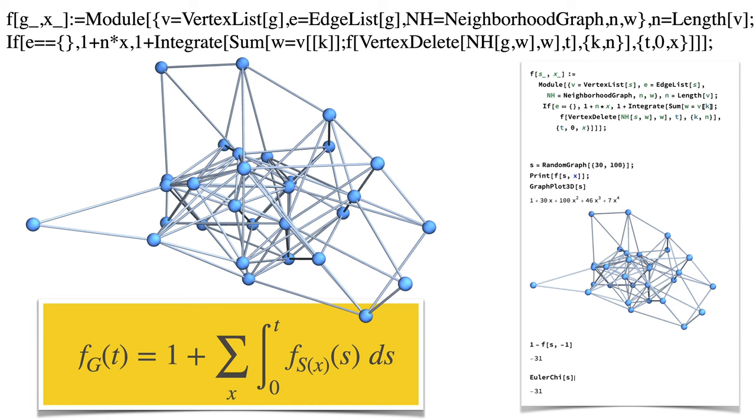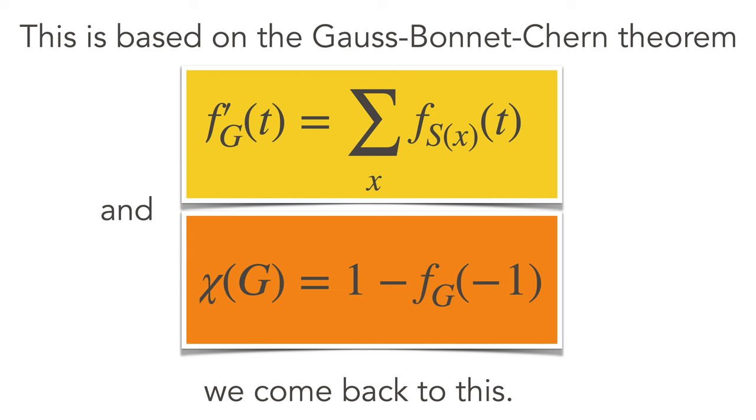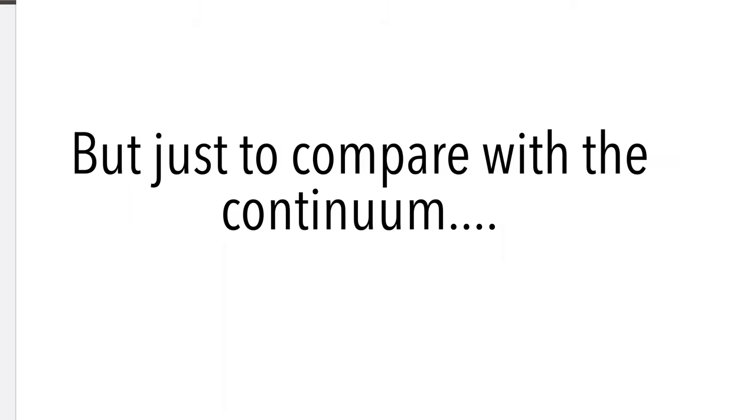This produces a function. This function can be generated using the Gauss-Bonnet theorem. The idea is that we can look at the antiderivative of the simplex generating function of a unit sphere as a curvature. Two lines of Mathematica are enough to actually compute this simplex generating function without any libraries. Here's the theorem written in compact form: 1 minus f minus 1 is the Euler characteristic.